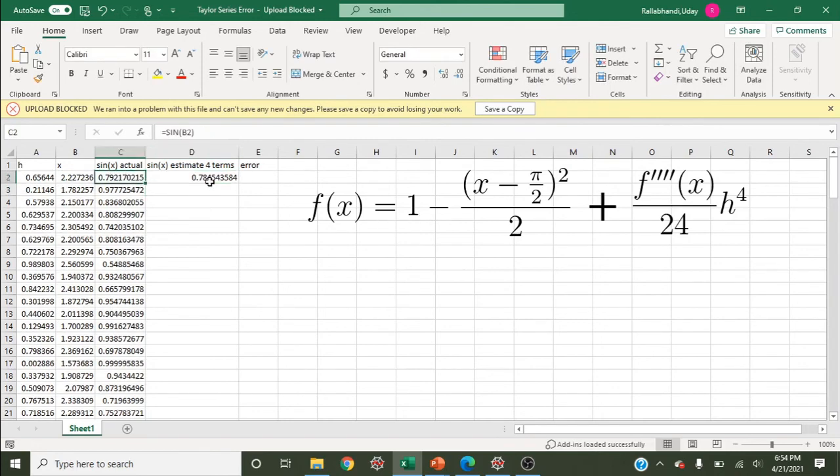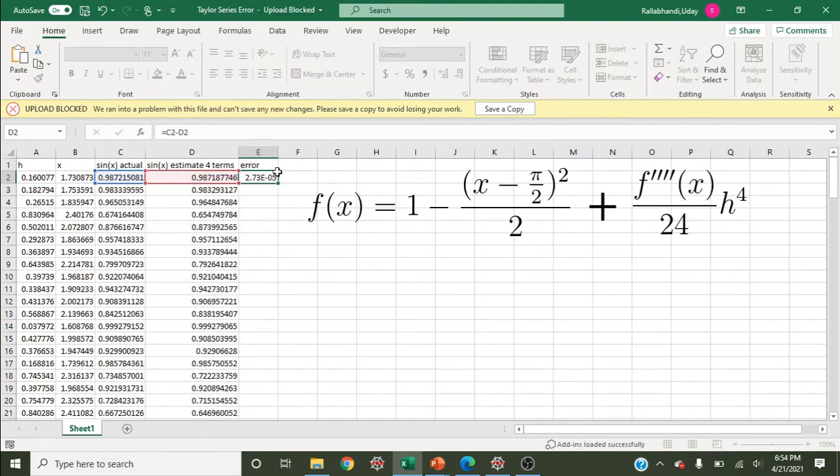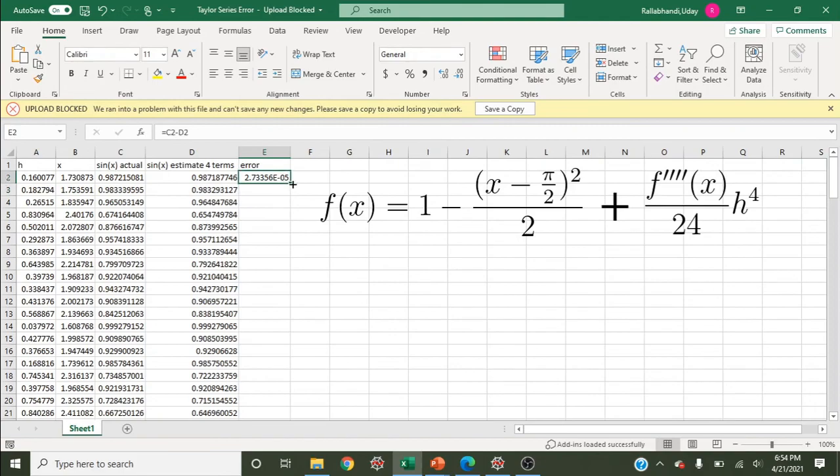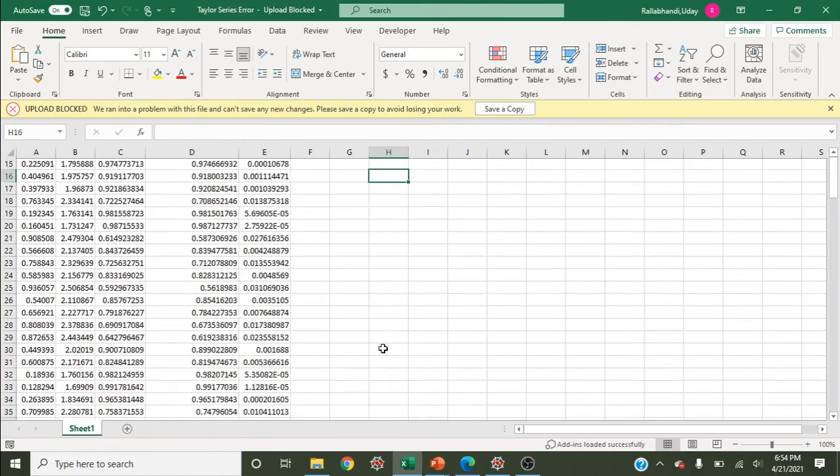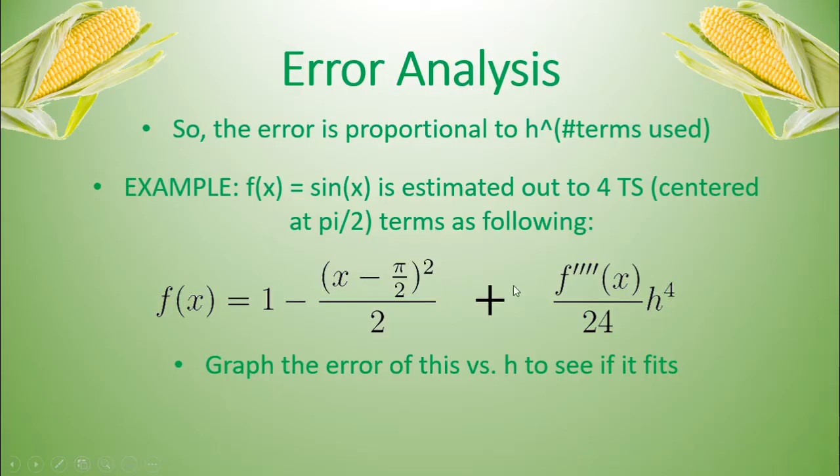We're pretty close to the actual, even just given four terms. Let's actually get an error value. So error is going to be the actual over minus the estimated. And let's fill this in. So now we filled in this chart. All we have to do now is graph, going back to our PowerPoint slide, is graph the error versus h to see if it has a power relationship up to the fourth. So let's go ahead and do that.